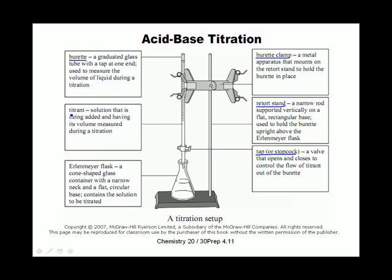Titrations always have two substances. One is called the titrant — it's what's in the burette. We are going to know what it is, so its concentration is always known, because we would have made this solution in the lab before we started. Its volume is going to be measured as it goes through the burette — we start at one level, use some, and end somewhere else. The difference will be the volume used for one experiment.